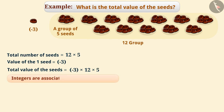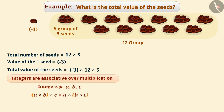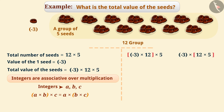Since integers are associative over multiplication, we can group the numbers in any order to multiply them. Here, we can make a group of minus 3 and 12, or we can make a group of 12 and 5.